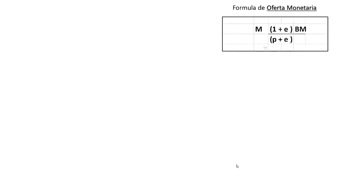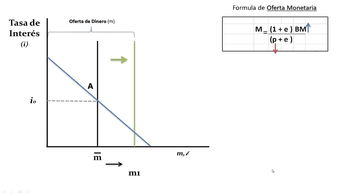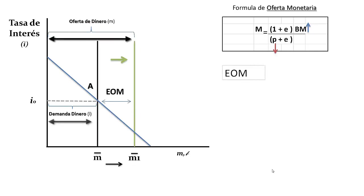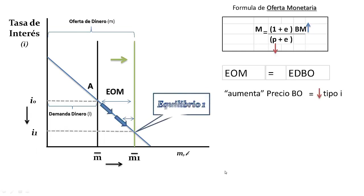Al estudiar la oferta monetaria, demostramos que la misma es igual a la fórmula indicada. Ahora, si el Banco Central decidiera que haya más dinero en circulación — por ejemplo comprando bonos, lo que aumenta la base monetaria, o disminuyendo el encaje legal de caja — partiendo de un punto de equilibrio en el mercado de activos, la curva de oferta monetaria se trasladará a la derecha, determinando un exceso de oferta monetaria. Como el precio del bono es flexible, su exceso de demanda provoca un aumento de su precio y una baja en el tipo de interés, lo que genera un nuevo equilibrio en el mercado de activos.